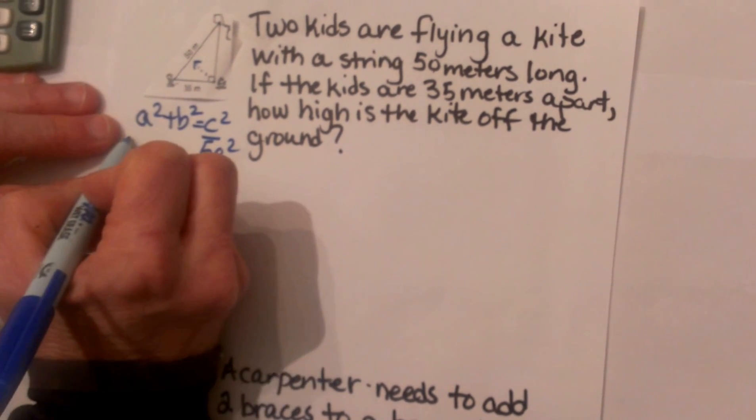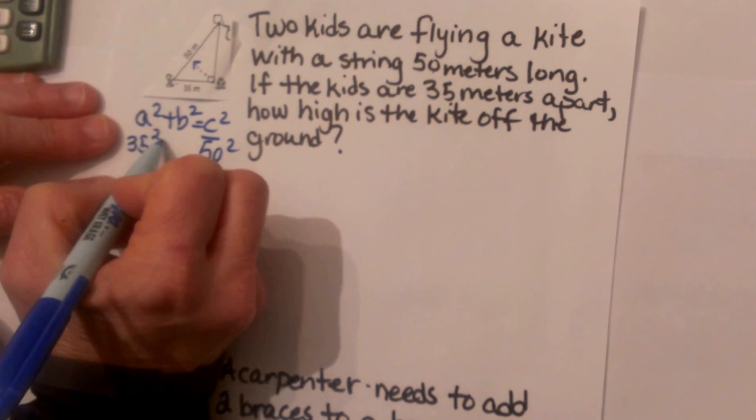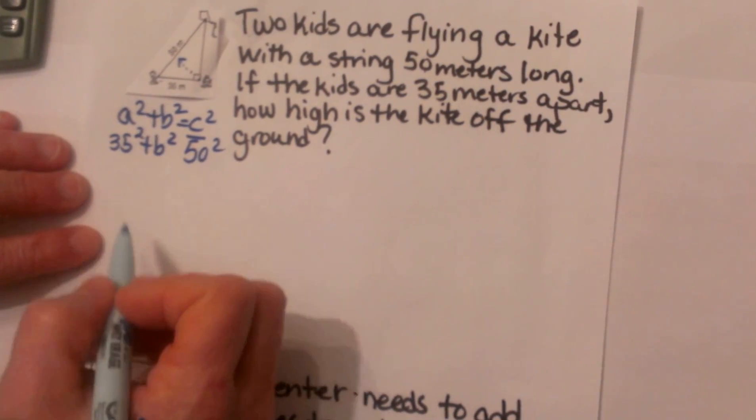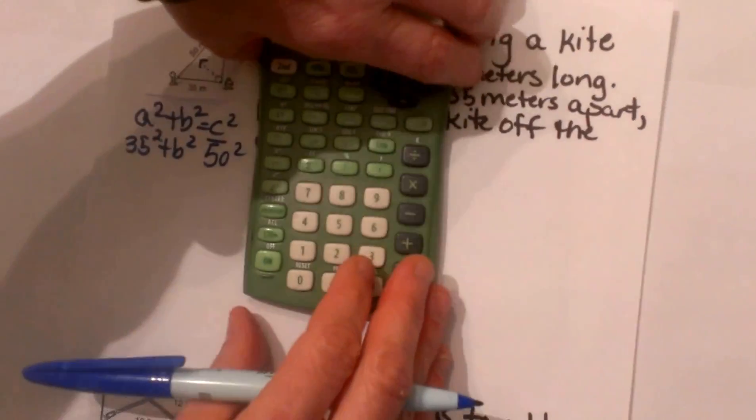One of the legs is 35 and I can plug that either in for a or b, I am just going to plug it in for a. So 35² + b² = 50². So now I am going to grab my calculator and I am going to take 50 and square it.